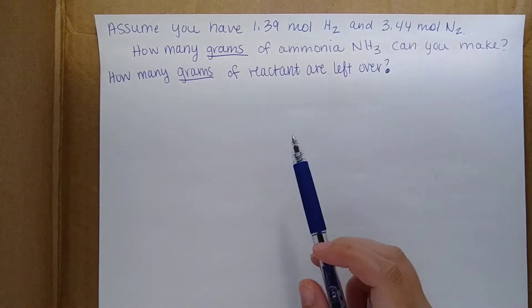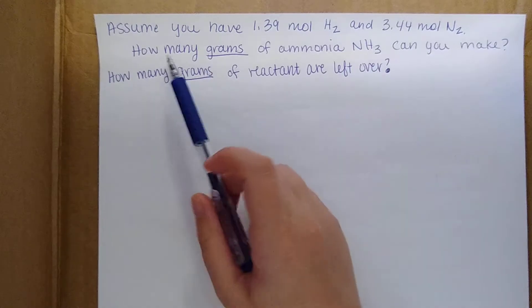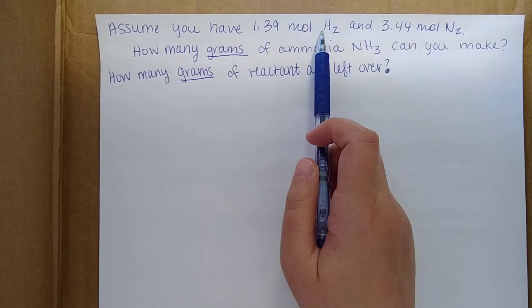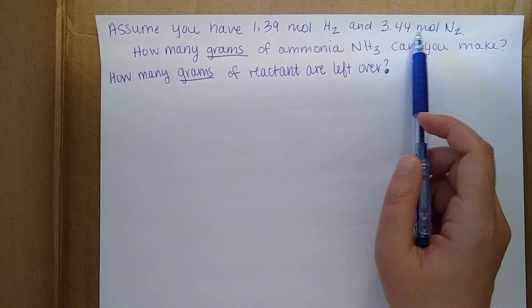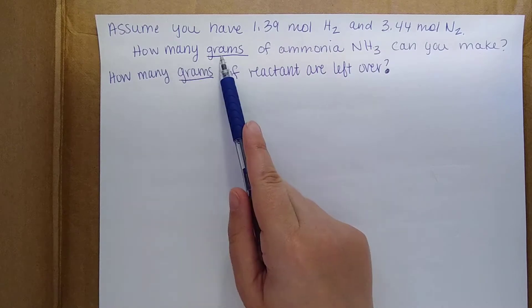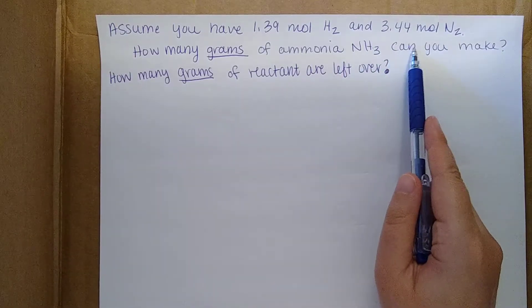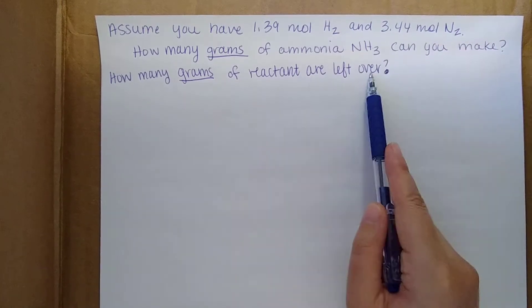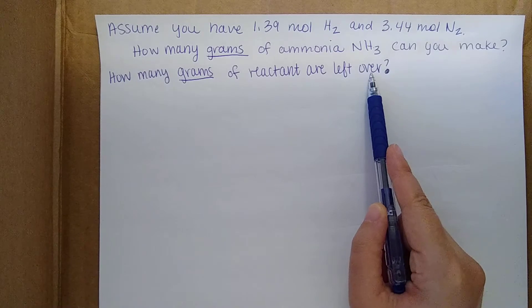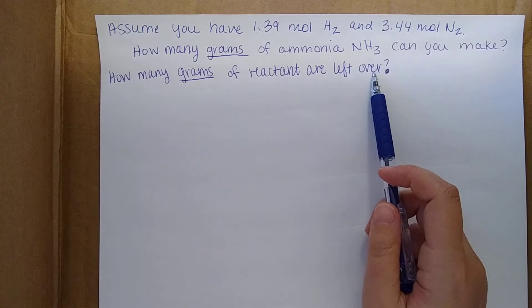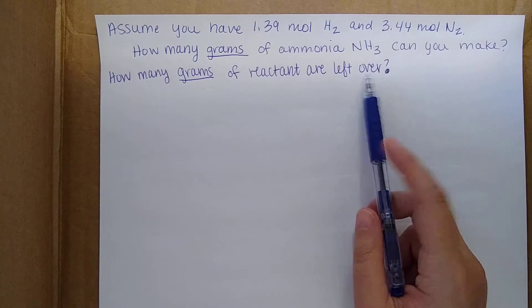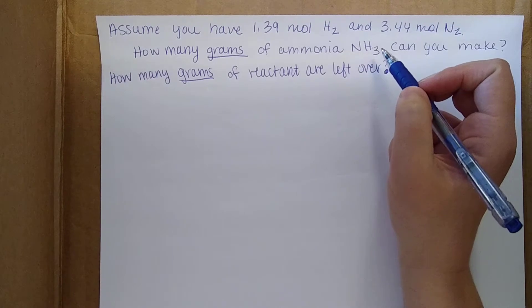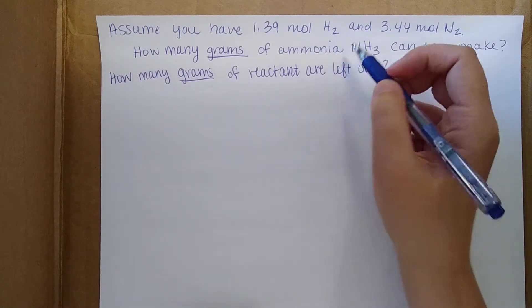Here's another limiting reactant example. In this question, they're telling you that you have 1.39 moles of H2 and 3.44 moles of N2, and it's asking how many grams of ammonia you can make from these two reactants, and then how many grams of the reactant are left over once the reaction is carried out. We need to figure out the amount of product we can make, which one is the limiting reactant, and how much excess we have left over.